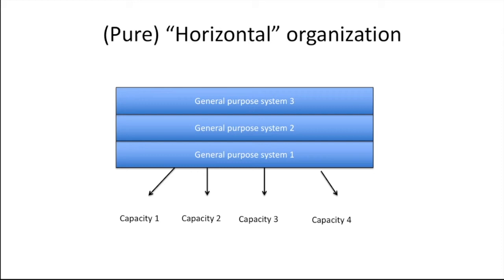So for instance, general-purpose system one could be a set of memory processes. General-purpose system two could be a set of learning procedures. General-purpose system three could be the organism's general attentional resources. So capacity one, on the other hand, might be playing the cello. Capacity two might be deciding where to invest your money. And capacity three might be understanding sentences. And capacity four might be tying your shoes. So what this diagram tells us is that the same memory, learning, and attentional systems would be recruited, in different ways of course, to deal with tasks as diverse as tying your shoes and making investment decisions.